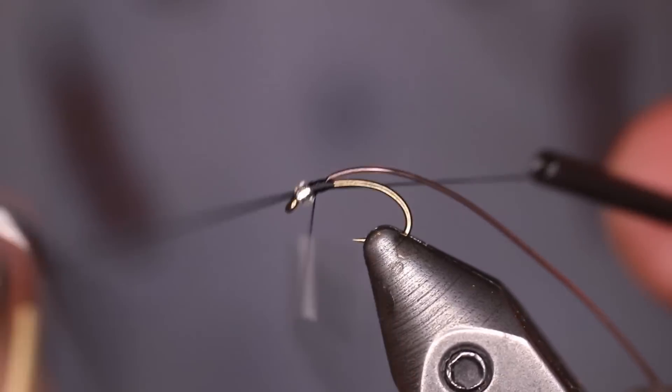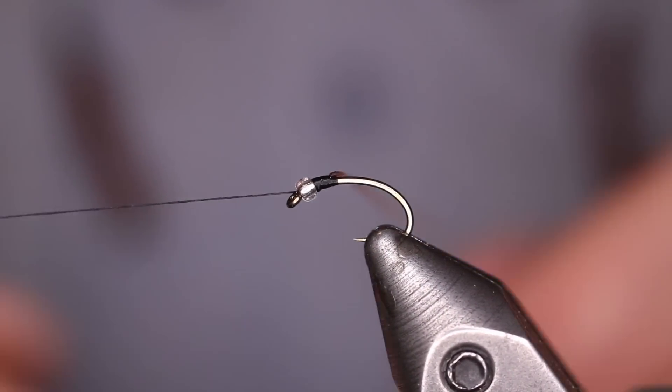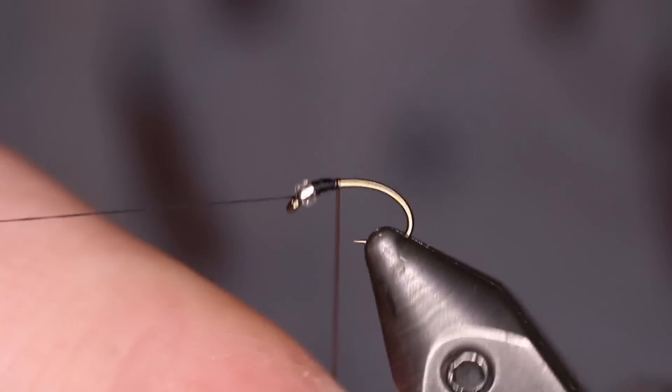Go ahead and throw a whip finish on there so I can use the rotary function on my vise. Then we're going to wrap the micro tubing down the shank.